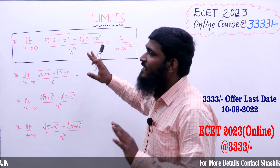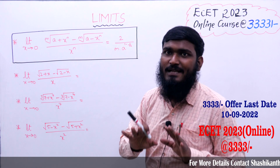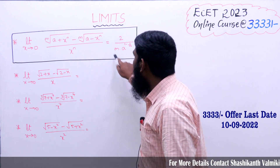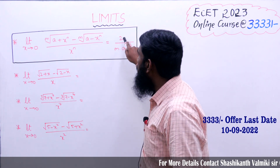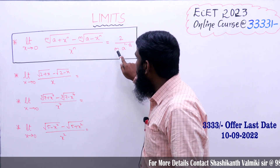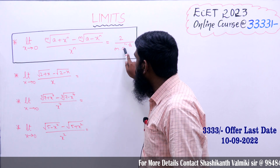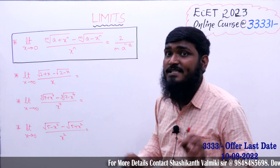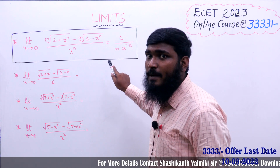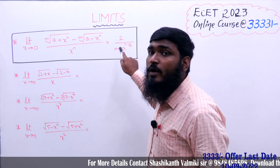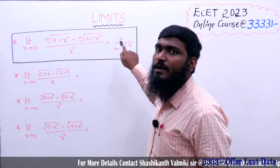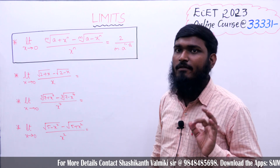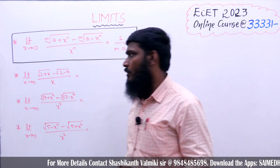If all these conditions are satisfied, we can write the direct answer as: 2 divided by m, multiplied by a to the power of (1 minus 1 by m). That is the formula we need to remember.